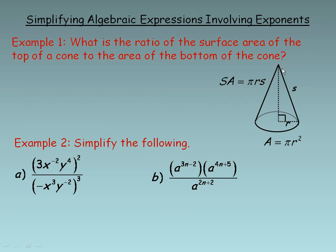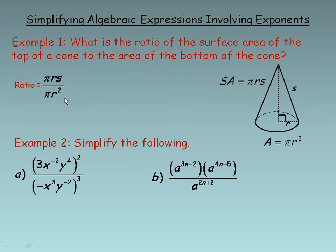Now, s is the slant height and r is the radius of the cone. The figure on the bottom is a circle, so its area is pi r squared. We are asked to find the ratio of these two areas — it is the ratio of pi r s to pi r squared. This ratio will simplify considerably.